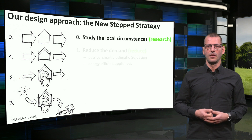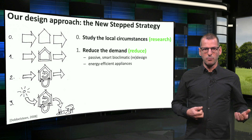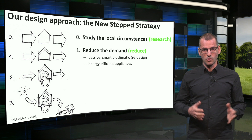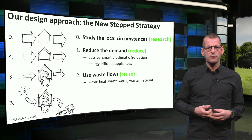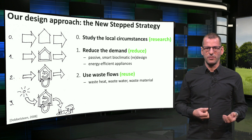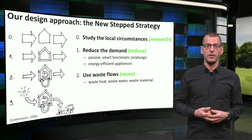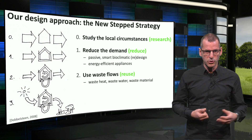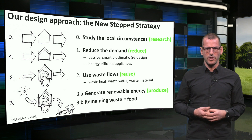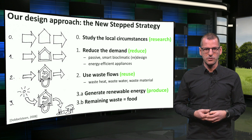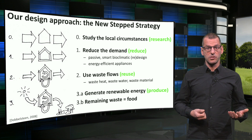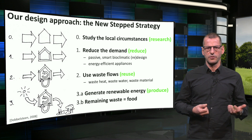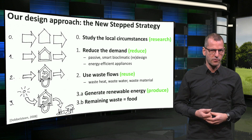The approach starts with a proper study of the local circumstances — research. Then we look at means to reduce the energy demand by means of passive, smart bioclimatic design and through energy efficient appliances — reduce. There is a lot of residual energy in air, water and material which often can be recovered to be used in the building, so the next step is to make use of these waste flows — reuse. The final step is to generate the remaining demand from renewable energy sources — produce. If there is waste remaining, it should not disturb the environment anymore, but be food or resource for other processes, as clarified by the cradle-to-cradle theory.